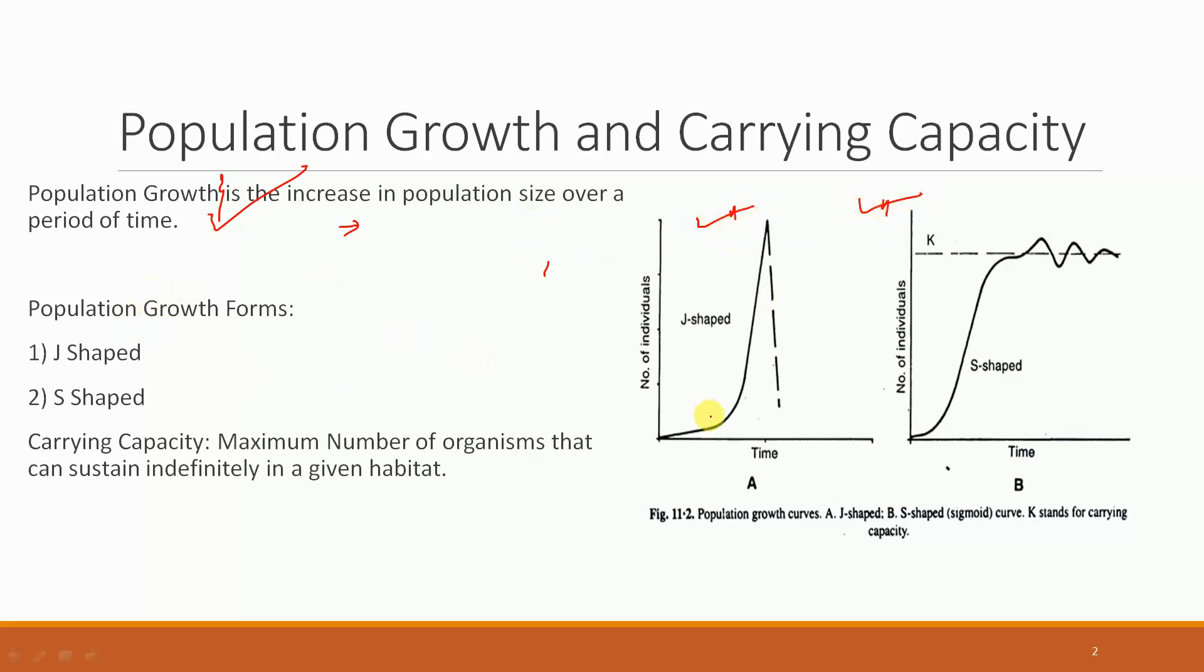In J-shaped population growth, there is a sudden increase in the population. For instance, some insects might increase suddenly in number during rainy season, then they reach a peak and suddenly crash. This represents a J-shaped curve of population growth.